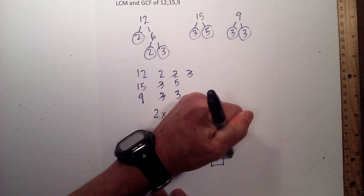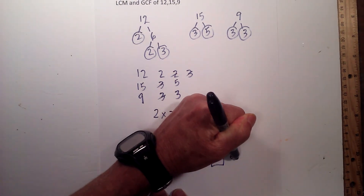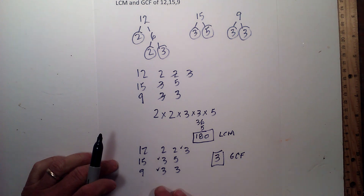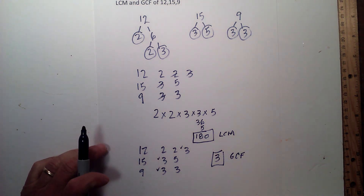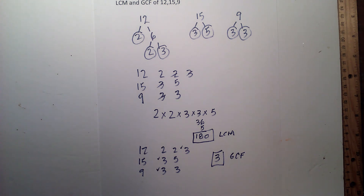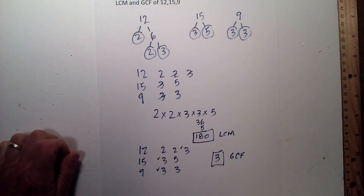So there we go — the LCM and greatest common factor of 12, 15, and 9. Thanks for watching! Moomoo Math uploads a new math and science video every day — please subscribe and share.